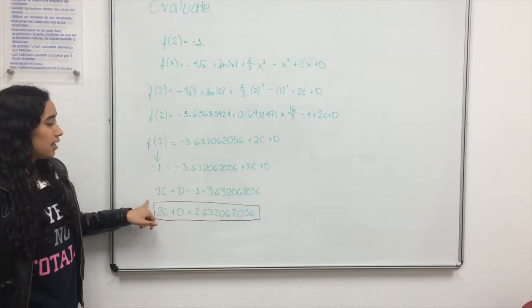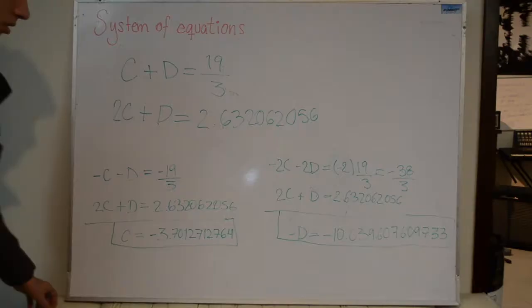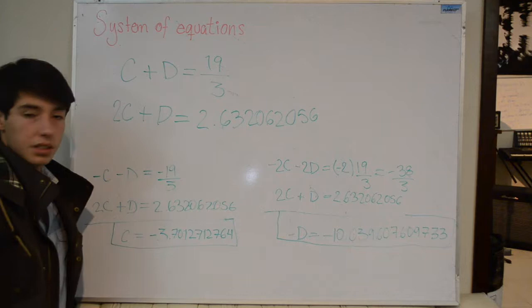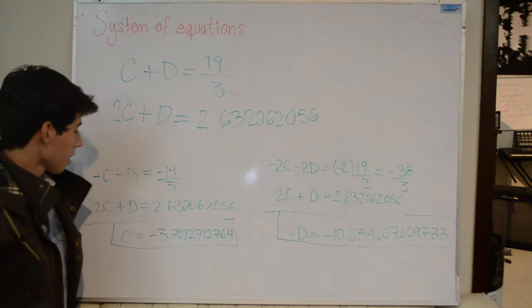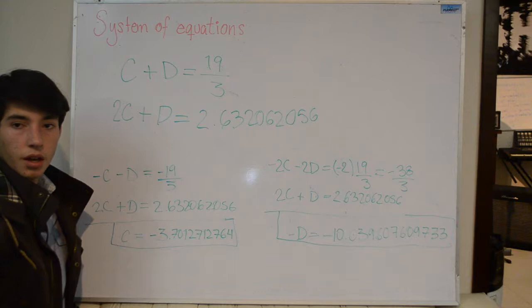And so we get that 2c plus d equals 2.6632062056. So now we have to make a system of equations. We have our first equation here is c plus d equals 19 thirds, and our second equation 2c plus d equals 2.63 and so on. And we have to isolate each value so that we get c and then we get d.